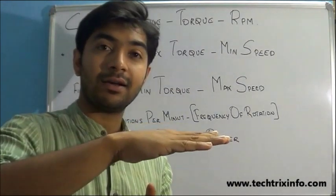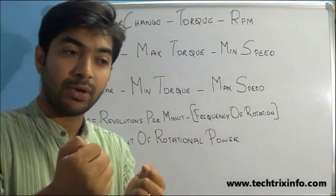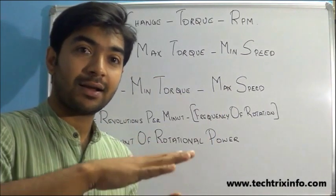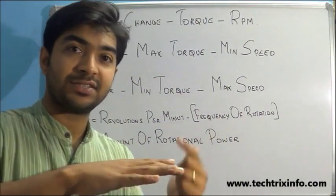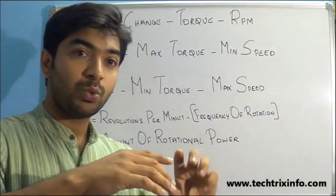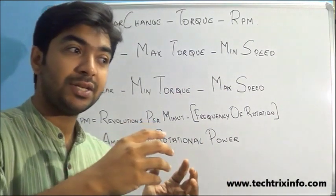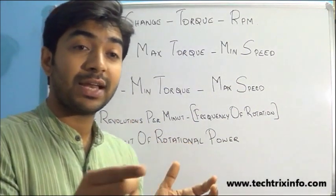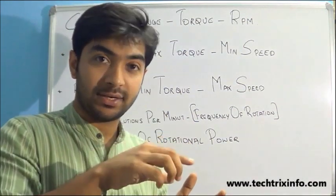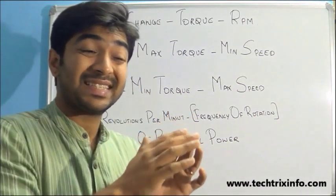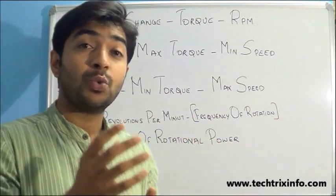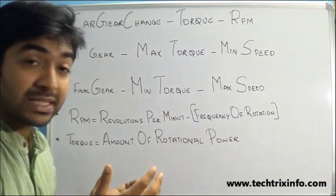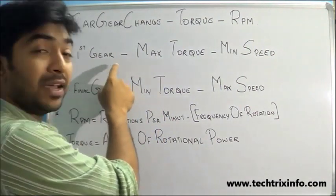While starting a car, we need maximum torque because the vehicle is at rest — the four wheels are at rest — so there is maximum resistance. The engine is required to produce that much torque so that we can start the wheels rotating. The same situation applies when driving uphill, so we need maximum torque.